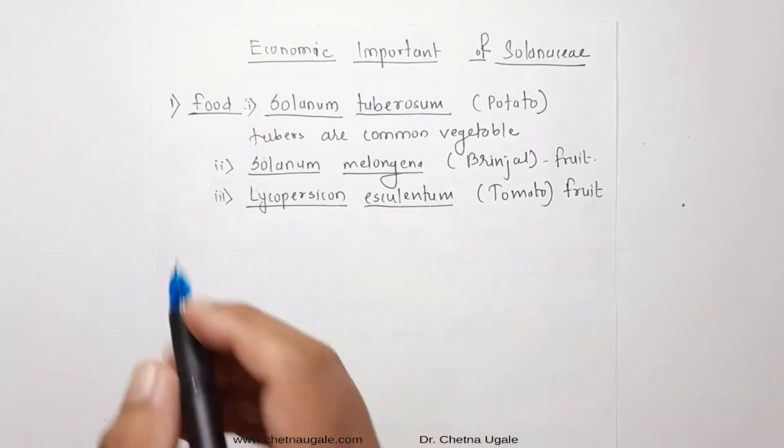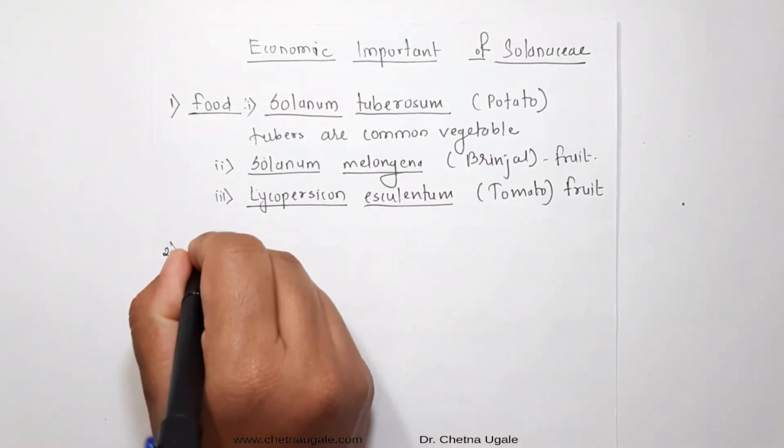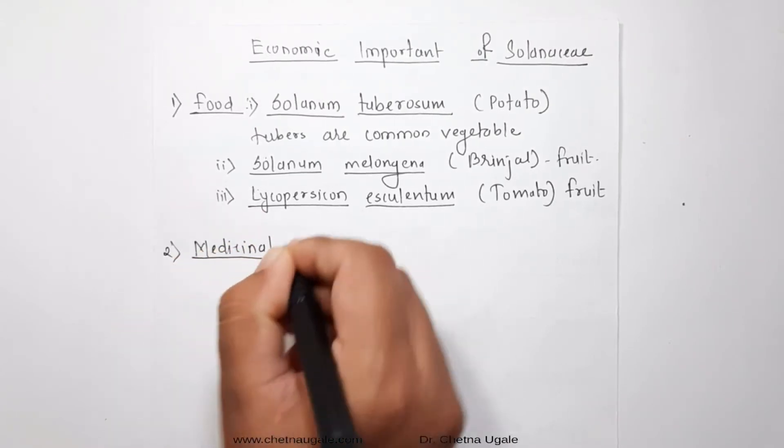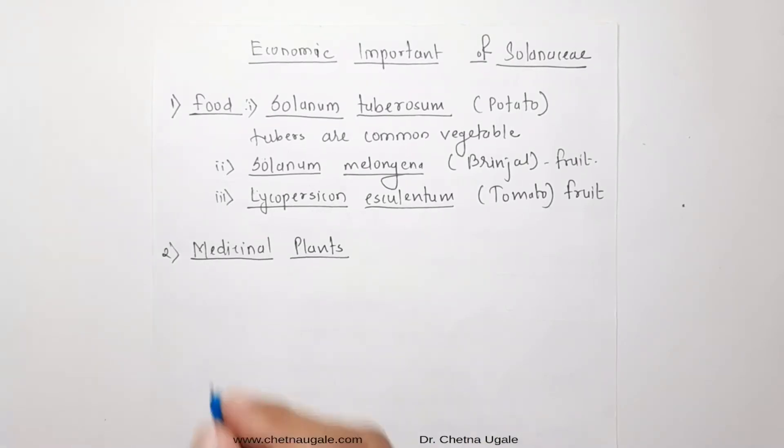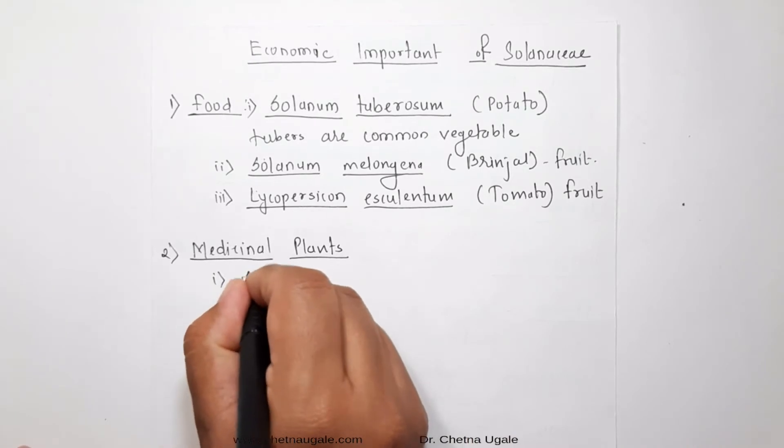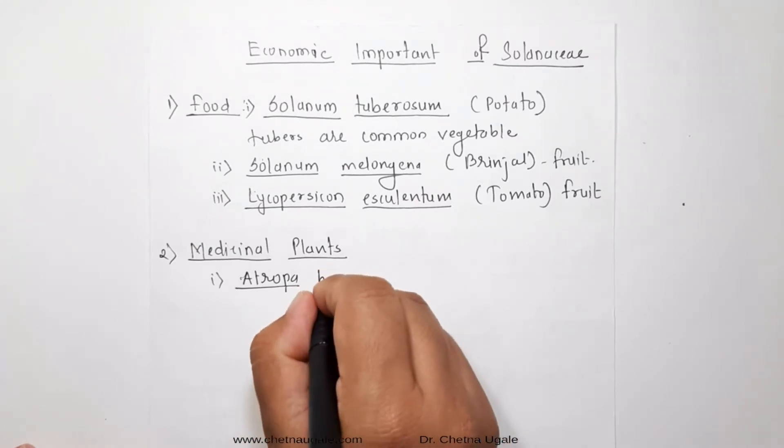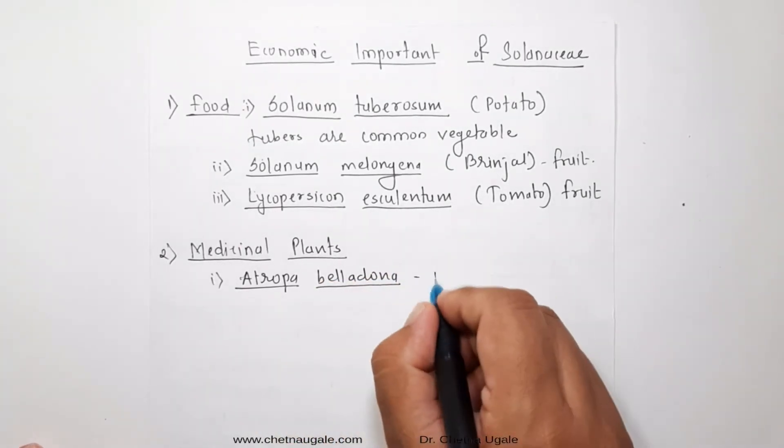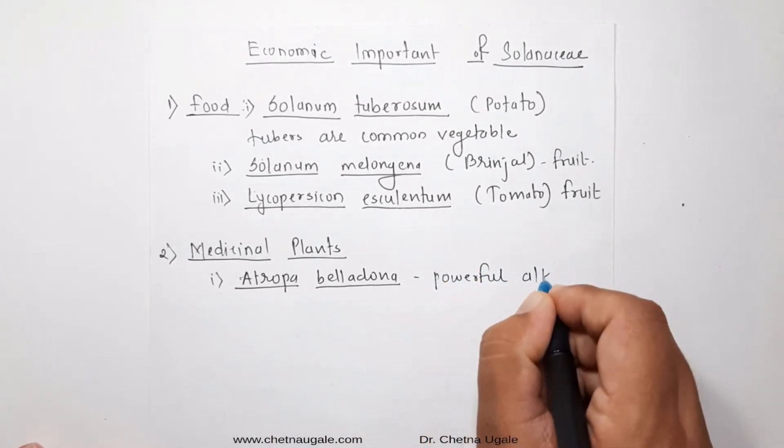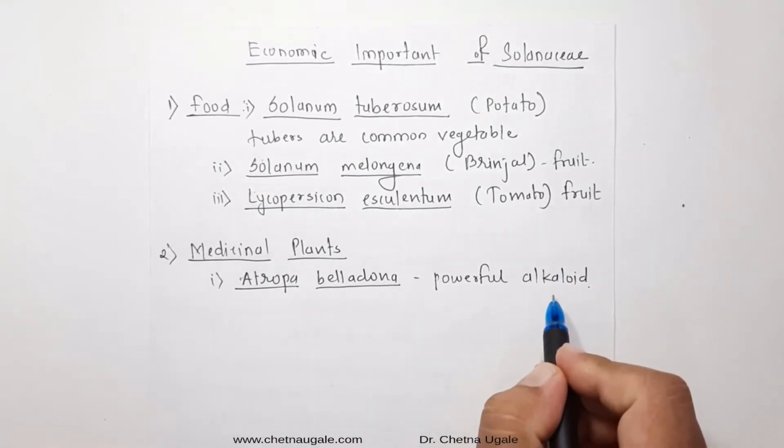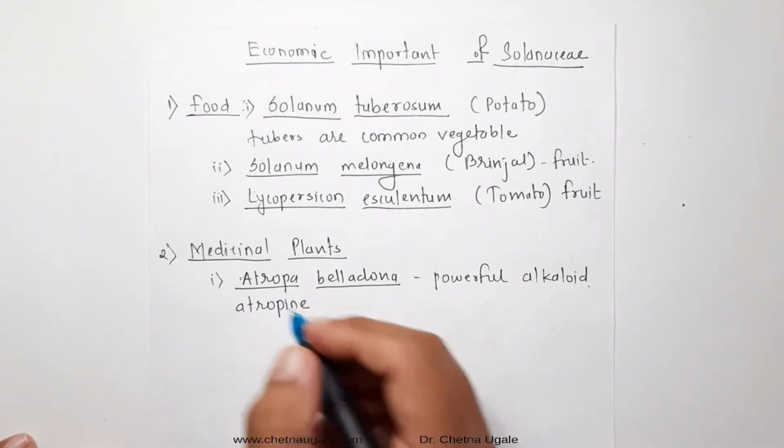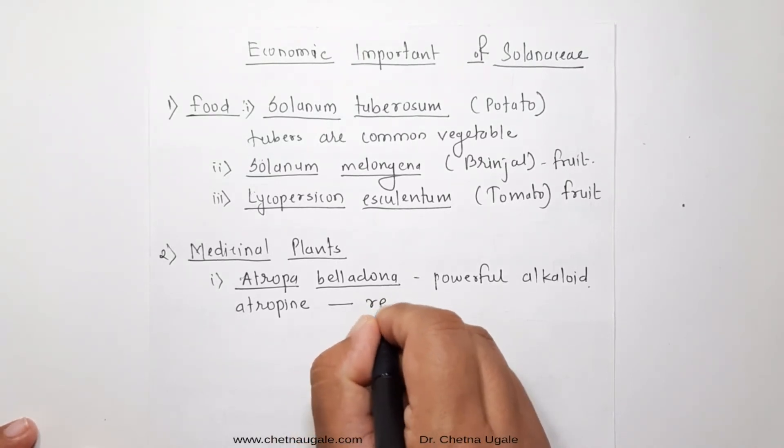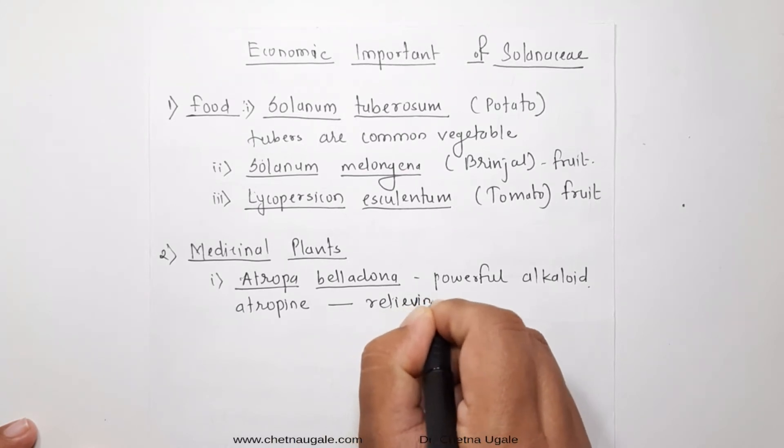The next one is medicinal plants. Plants belonging to the Solanaceae family have medicinal properties or medicinal values. Out of which, the first one is Atropa belladonna. Atropa belladonna forms powerful alkaloids which is called as atropine. This alkaloid is used for relieving muscular pain.